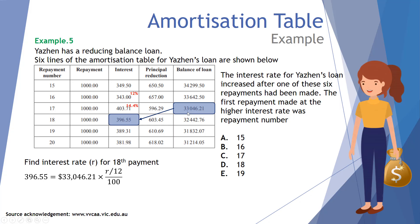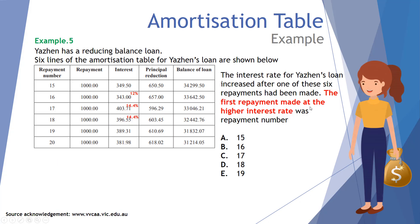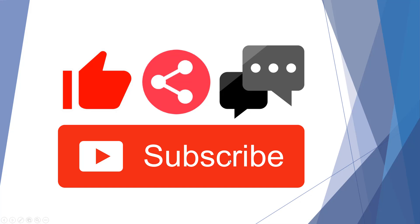For payment 18, the balance was thirty-three thousand and forty-six dollars and twenty-one cents with interest of three hundred and ninety-six dollars and fifty-five cents, again giving a rate of 14.4 percent. So repayment 16 was at 12 percent, repayment 17 was at 14.4 percent, and it remained at 14.4 percent after that. The first repayment at the highest interest rate was repayment number 17, which is option C. Thank you for watching — if you've learned something, please like, share, comment, and subscribe.